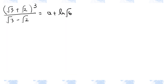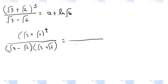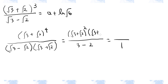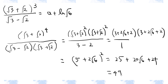We need to modify the left-hand side of this equation so that it conforms to the form that appears on the right-hand side. First of all, in order to rationalize the denominator, let's multiply both the denominator and the numerator by root 3 plus root 2. The denominator becomes 3 minus 2, which is 1, and root 3 plus root 2 to the fourth power is the same as root 3 plus root 2 squared times root 3 plus root 2 squared. So a is 49 and b is 20.